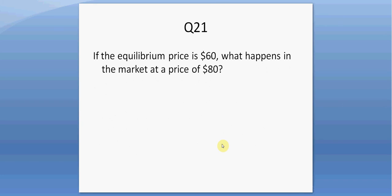Question twenty-one. The equilibrium price is $60. What happens in the market at a price of $80? When the current price exceeds the equilibrium price, you're going to have a surplus or excess supply. Sellers want to sell more than consumers want to buy at $80 — this will be a market imbalance of a surplus.